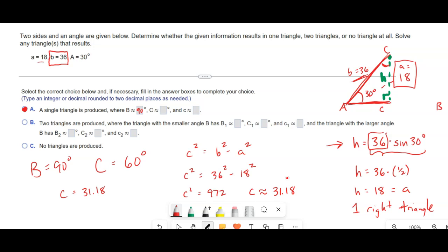If A is less than that, it means you don't have a triangle at all. And we would pick C. If A was bigger than that but smaller than B, that means we have two triangles, which we'll see in a future example.